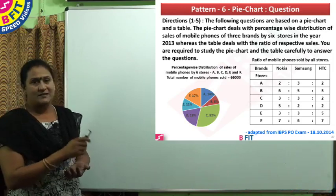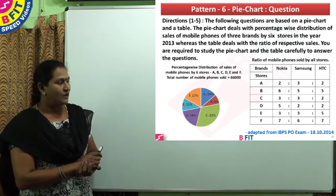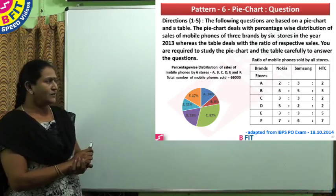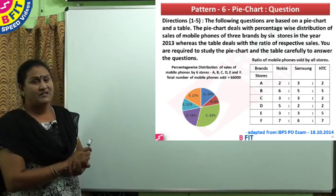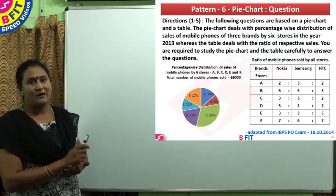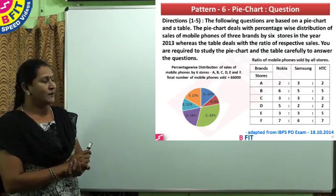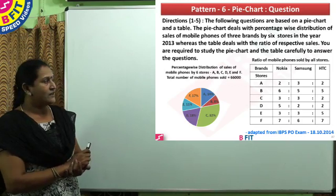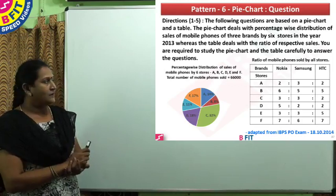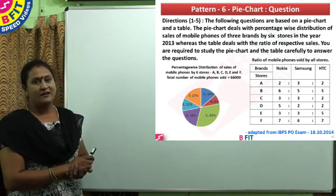This question was taken from the IBPS PO exam 2014. The data deals with six stores which sell mobile phones. The total number of phones sold by all six stores A, B, C, D, E and F is given as 66,000. The percentage-wise distribution of this sales is given in the pie chart.